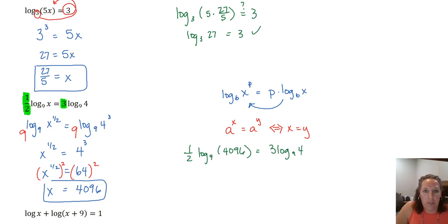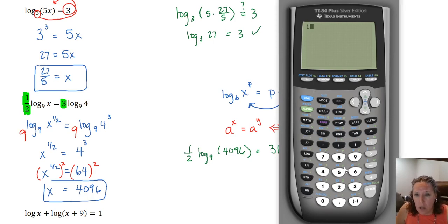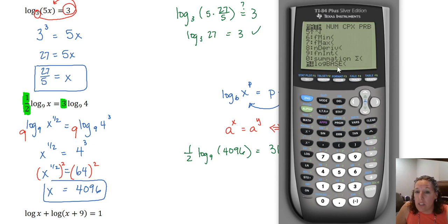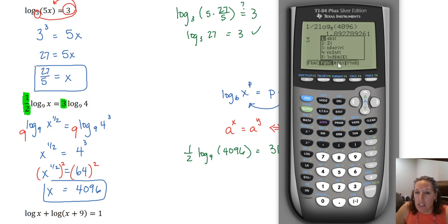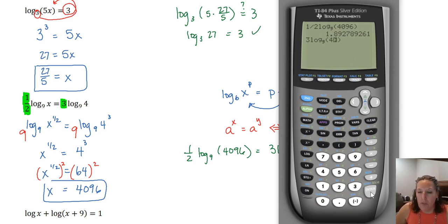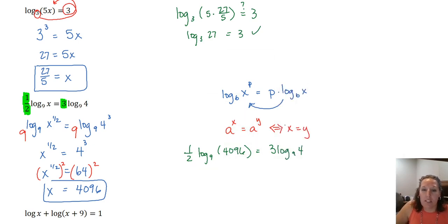We can check this using a calculator. On the left side, 1/2 times log base 9 of 4,096 gives approximately 1.89. On the right side, 3 times log base 9 of 4 gives the same number. On a TI-84 or higher you can use the log base function from the math menu, or use alpha-window; on a TI-83 you'll need the change of base formula.